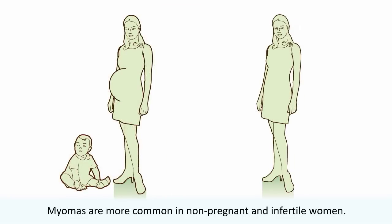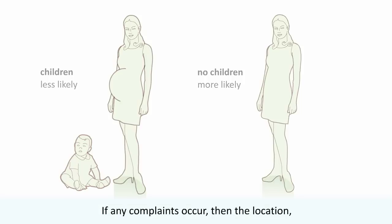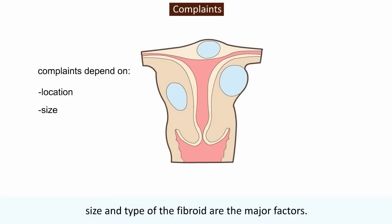Myomas are more common in non-pregnant and infertile women. In general, fibroids are asymptomatic or associated with just a few complaints. If any complaints occur, then the location, size and type of the fibroid are the major factors.